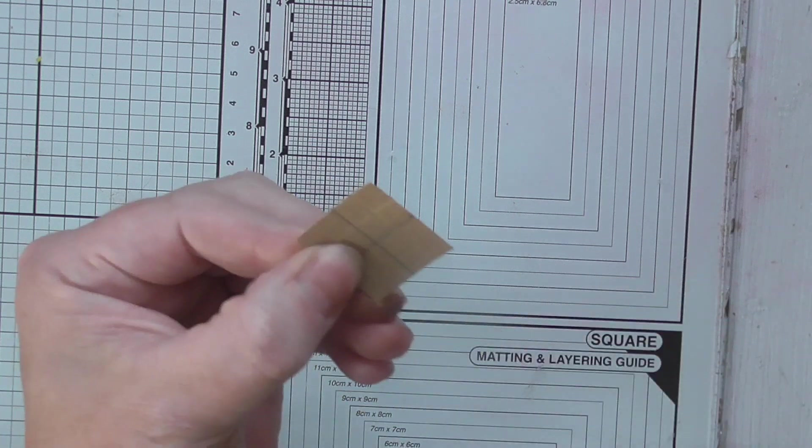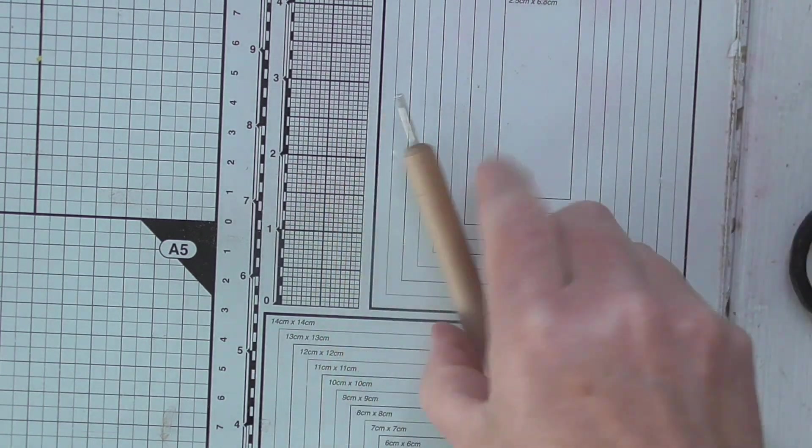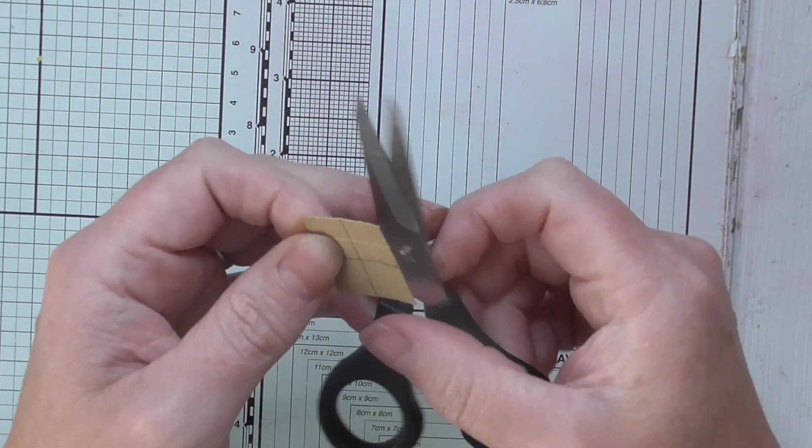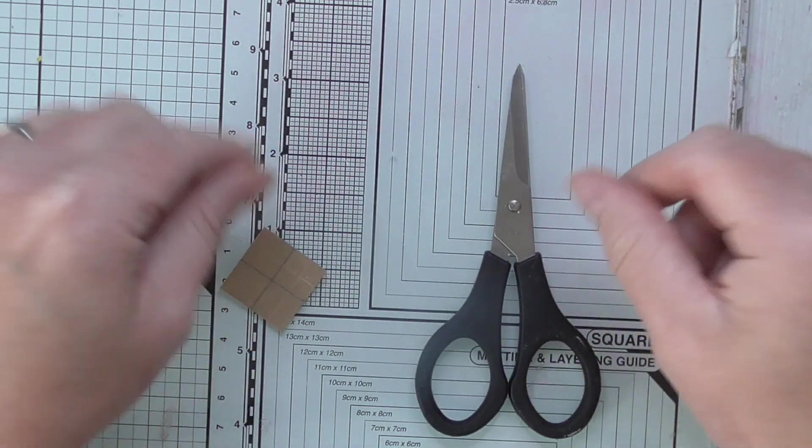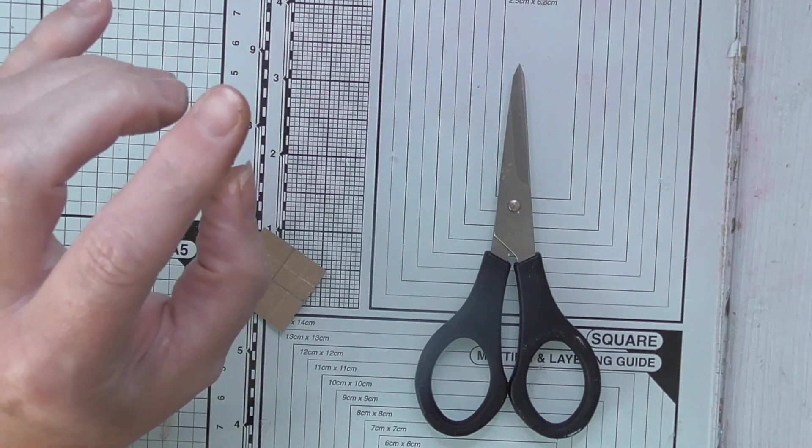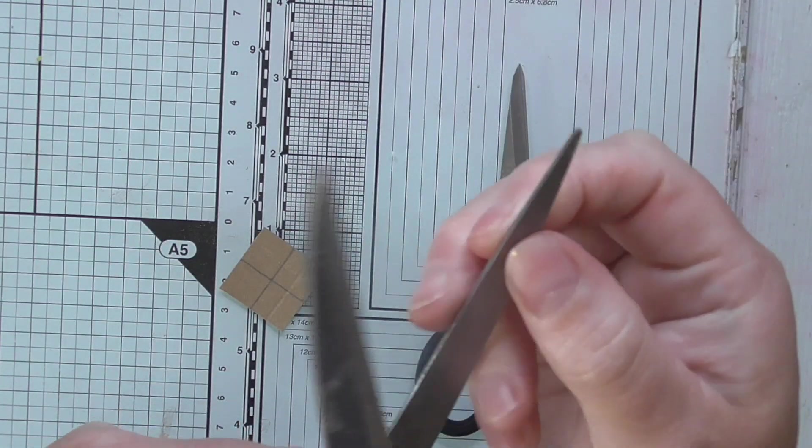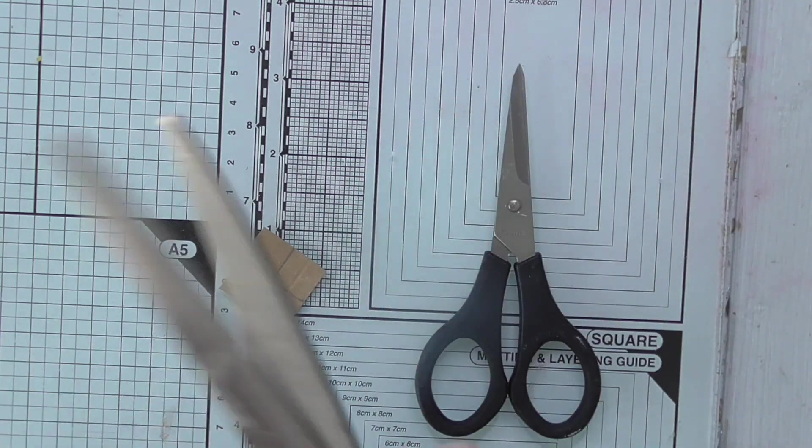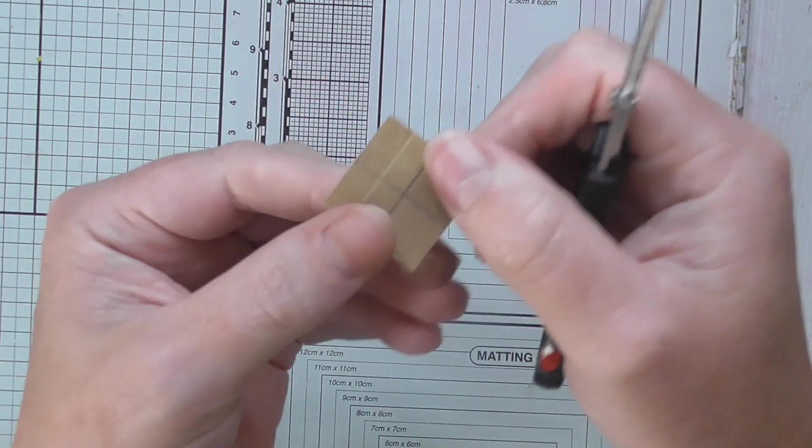So then what we want to do is get some scissors which have got what I call pointer and narrow blades. I've got another pair of scissors here. These are much bigger and you can see the thickness of those blades - they're quite chunky. You need the thinnest scissors you can find for precision because it's a small project.